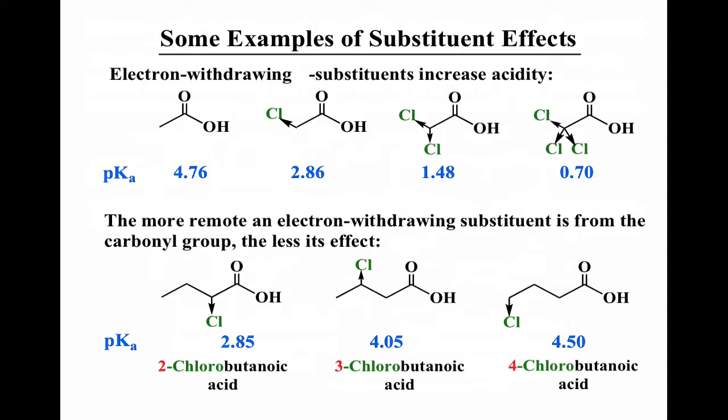The position of the halogen matters greatly. If the chlorine is on the alpha carbon, we get about 2.85 pKa. Moving it to the beta carbon gives us close to unsubstituted. The inductive effect falls off very dramatically with distance — the best effect is when the halogen is on the alpha carbon right next to the carboxylate. Putting halogens far out on a long carbon chain barely affects the acidity. If you used fluorine instead of chlorine, the effect would be even larger — trifluoroacetic acid is actually a strong acid and quite nasty.